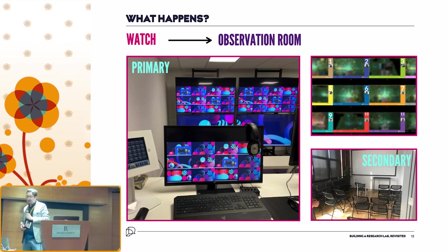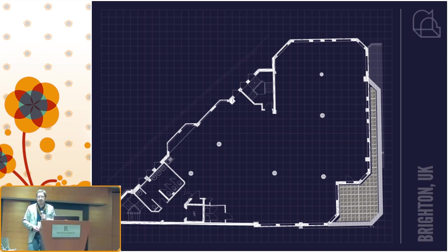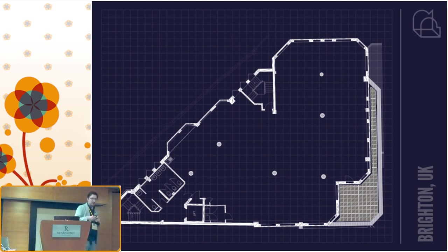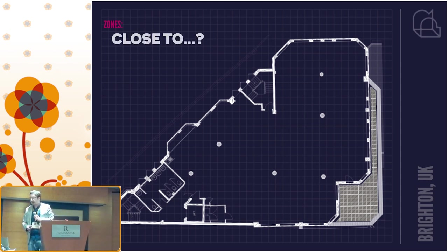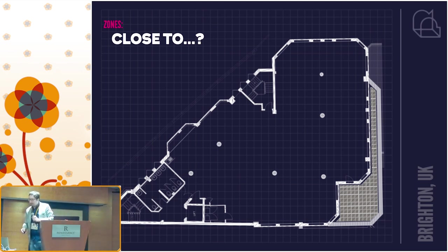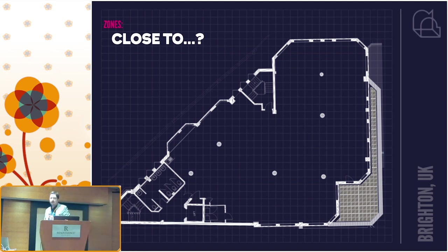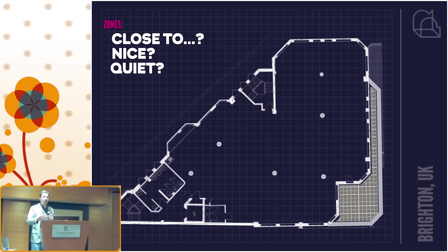We've leased open plan offices and applied the same zoning process I talked about in 2016. There are three zones that have made the most difference. This is the 3,700-square-foot facility in Brighton, UK. The three zones — and perhaps you'll undertake this process yourself — are: what needs to be close to what, what is nice, and what is quiet. With these three lenses you can break the back of a lot of the hard work about laying out these facilities.